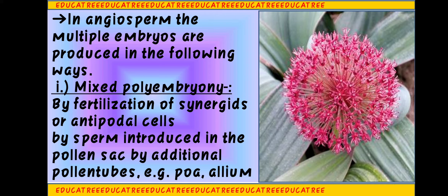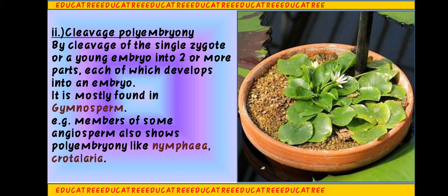The second type is Cleavage Polyembryony. As you understand from the name — 'cleavage' means breakage — when a single zygote or a young embryo divides into two or more parts, each part forms one embryo. That is why we call it Cleavage Polyembryony. It is mostly seen in Gymnosperms, but in Angiosperms it can be seen in Nymphaea or Crotalaria.